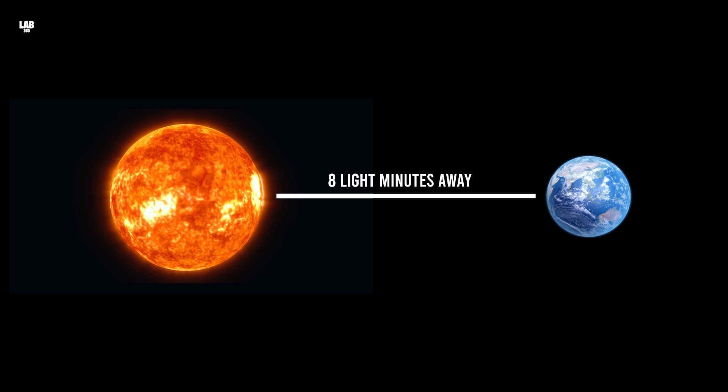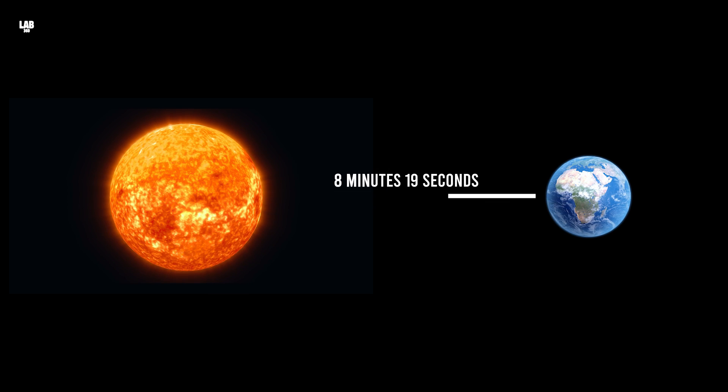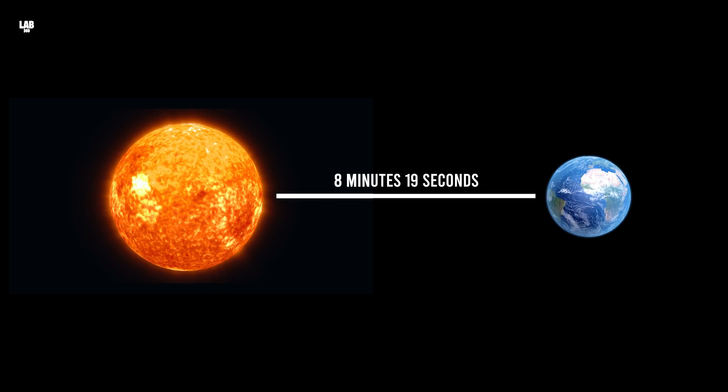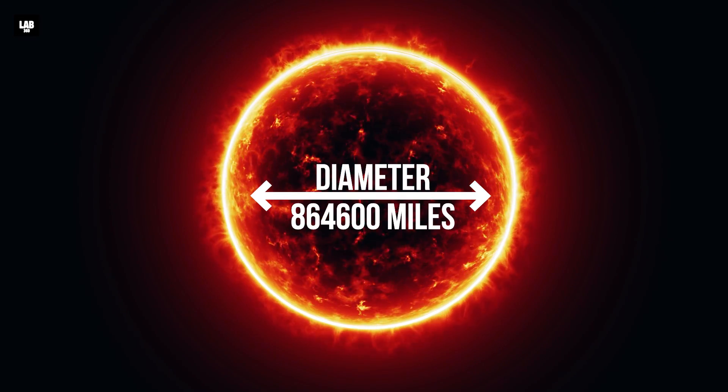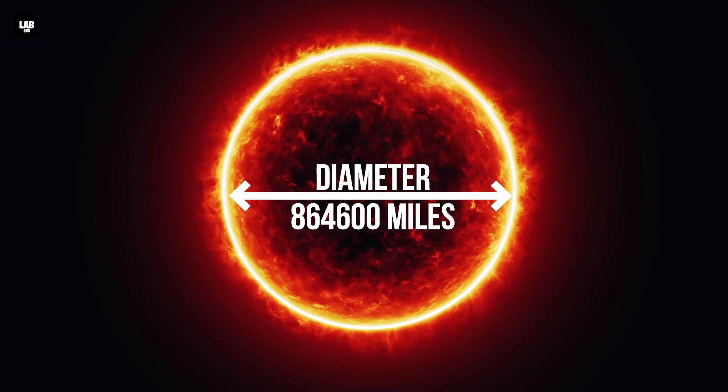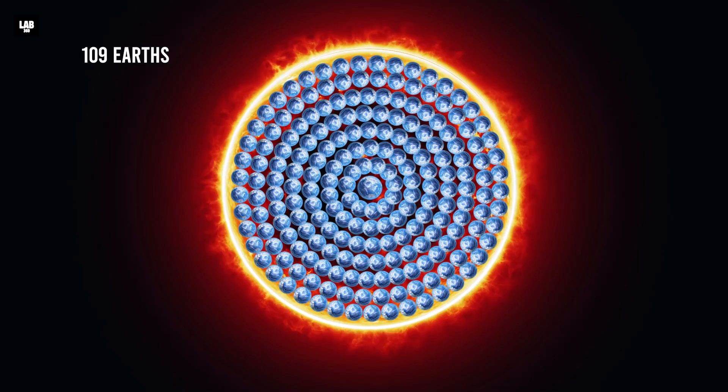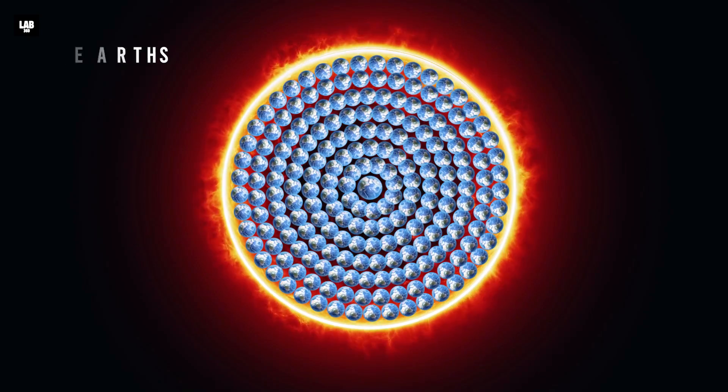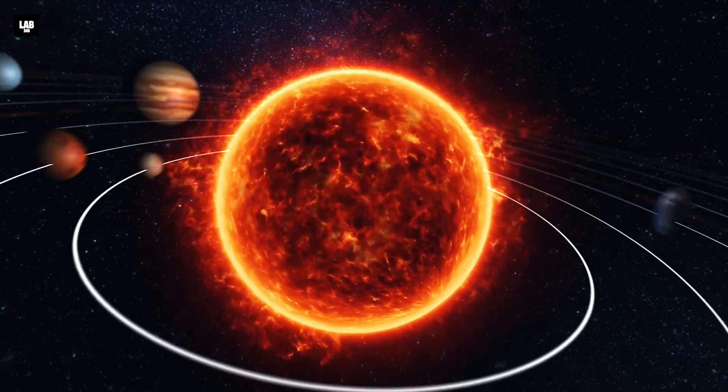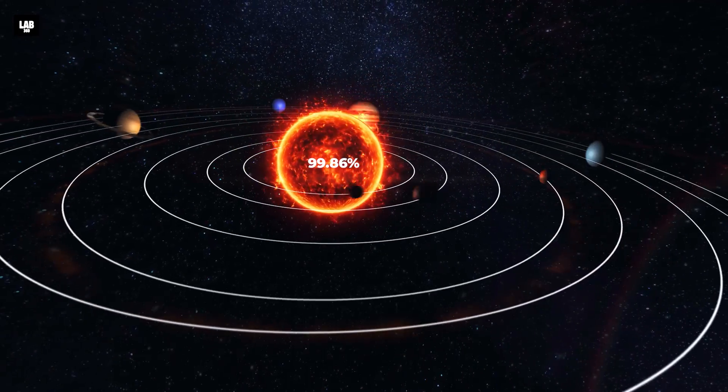The sun is eight light minutes away from the Earth, meaning light from the sun takes 8 minutes 19 seconds to reach us. The sun is massive, with a diameter of 864,600 miles. 109 Earths could line up inside the sun's diameter. Did you know that the sun is so huge that it makes up 99.86% of the total mass of the solar system?